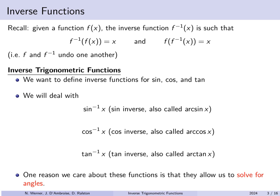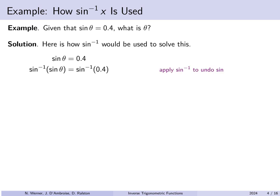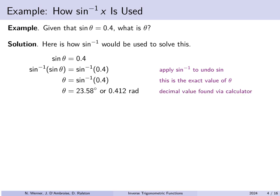One reason we want to introduce these functions is so that we can solve certain problems for angles. For example, suppose that sine of theta is 0.4. What is theta? We begin with sine of theta equals 0.4. We feed both sides into the arc sine function, specifically because arc sine and sine will undo one another. So on the left, the arc sine of the sine of theta is just theta. So theta equals the arc sine of 0.4, which gives us 23.58 degrees or 0.412 radians.